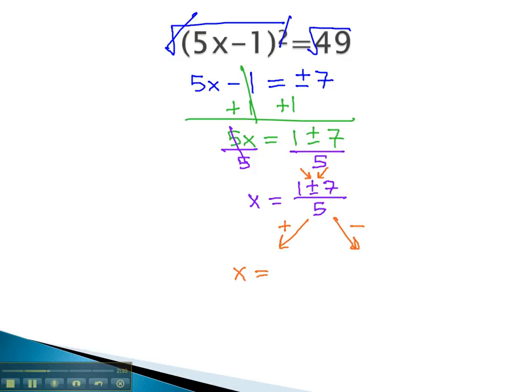1 plus 7 is 8 over 5. The other option gives 1 minus 7, which is negative 6 over 5. This will give us our two solutions for x: 8 fifths and negative 6 fifths.